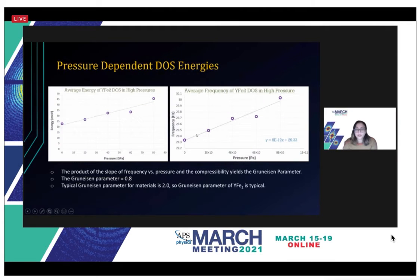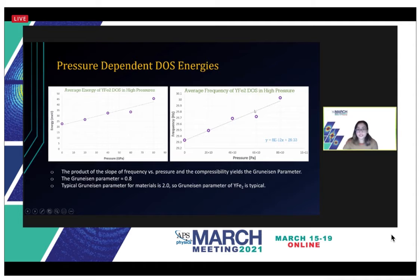We plotted the pressure-dependent phonon density of states energies to understand the relationship between energy and pressure. We also plotted frequency versus pressure, and as expected the frequency increases with increasing pressure. The Grüneisen parameter was found by multiplying the slope of this trend line by the compressibility of the material. The value we calculated for the Grüneisen parameter was 0.8; typically this value is 2.0 for most materials, so we are within this range.